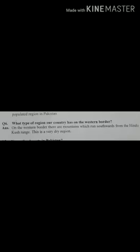Question number six: What type of region does our country have on the western border? Answer: On the western border there are mountains which run southwards from the Hindu Kush range. This is a very dry region.